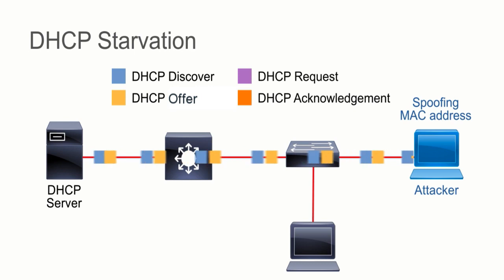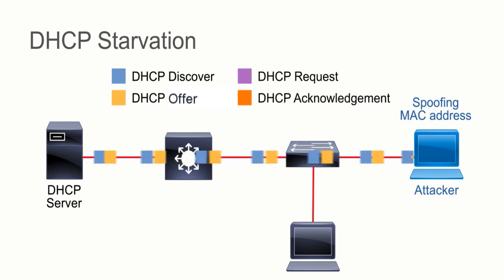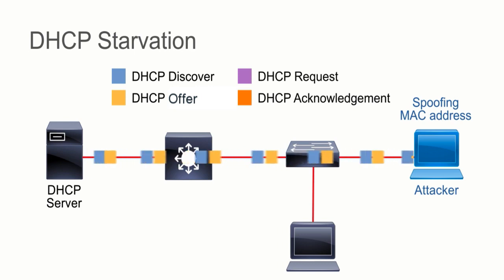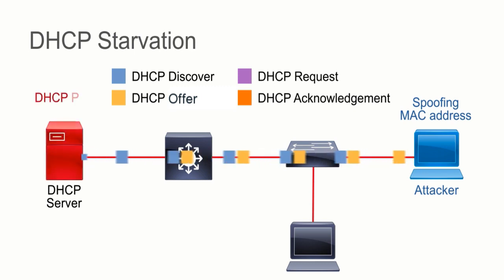Now at this point, he's allocated those addresses. He's not going to give them to anybody else until he hears back on whether the clients want to use them or not. Nobody's going to reply back. And if the spoofing keeps happening and these DHCP request messages keep happening, eventually we use all of the addresses in our DHCP pool.